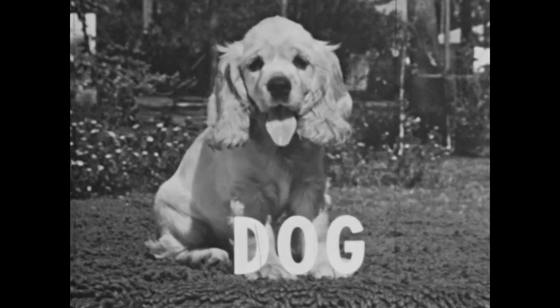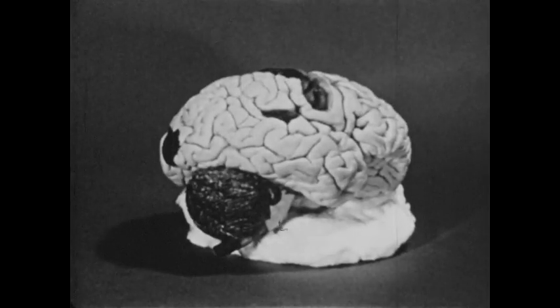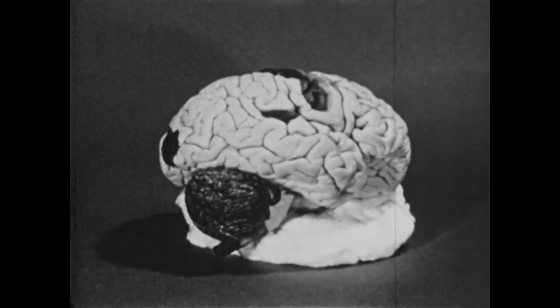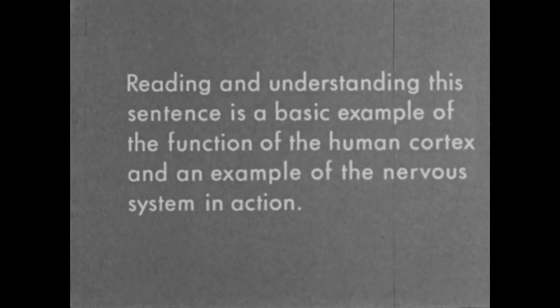In the same way, associative areas of your cortex enable you to associate the stimulus of a word with a variety of mental images of what the word stands for. The wonderful cortex of the human brain enables you to think of ways a problem can be solved, and the solution itself. Reading and understanding a sentence is a basic example of the function of the human cortex, and an example of the nervous system in action.